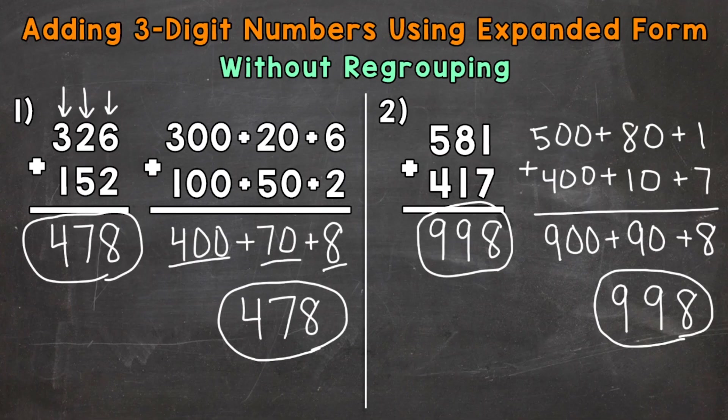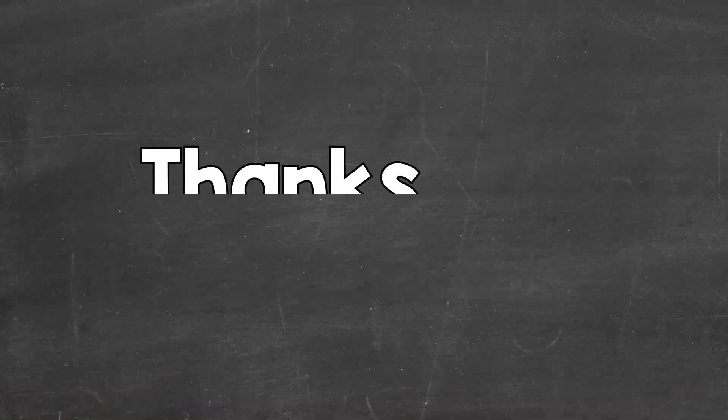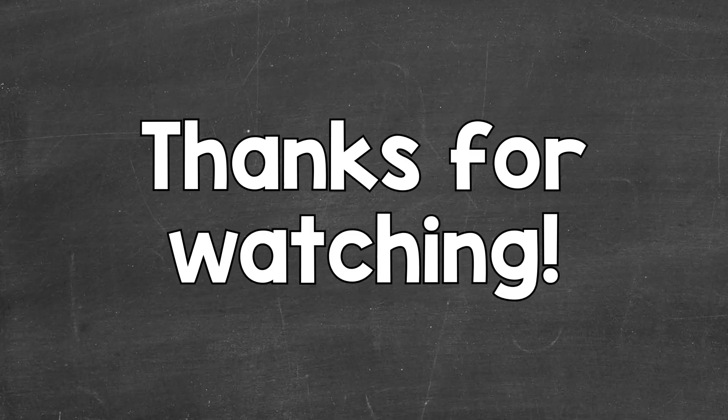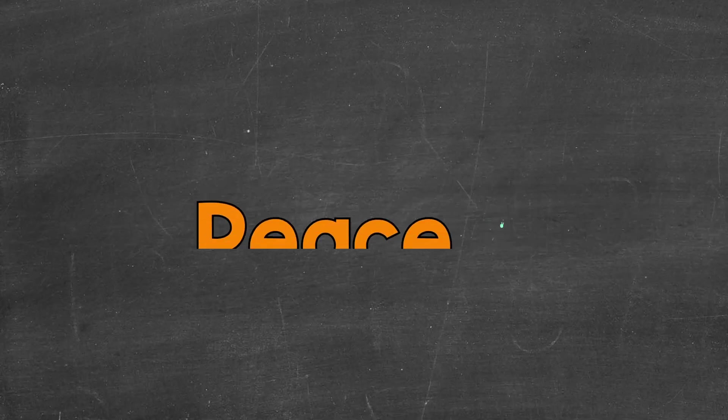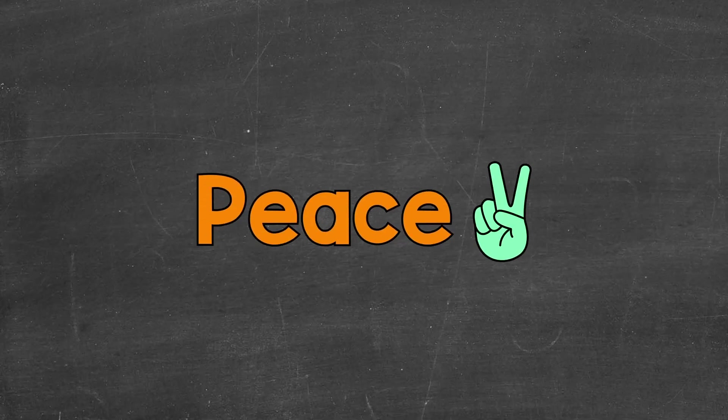So there you have it — that's how you add three-digit numbers using Expanded Form. I hope that helped. Thanks so much for watching. Until next time, peace.